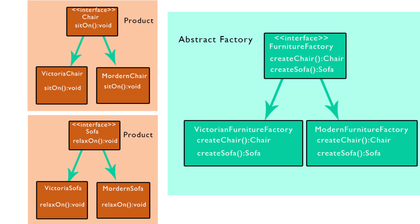The abstract factory pattern consists of several key components. First, the abstract factory interface, which declares a set of creation methods for various product types. Second, concrete factories — concrete classes that implement the abstract factory interface to create specific families of products. Third, abstract product interfaces, which declare methods that concrete products must implement. Fourth, concrete products — the specific product classes that implement the abstract product interfaces.